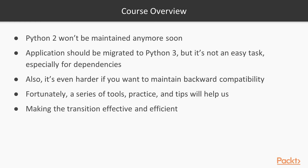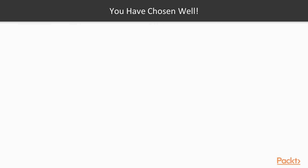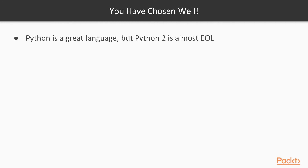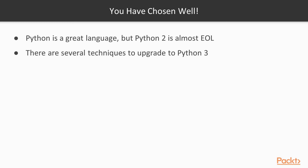We're also going to see how to make the transition effective and efficient. I think you're choosing well with this class, because Python is a great language, but Python 2 is almost at end of life. By the 1st of January 2020, it's going to be no longer maintained, and Python 3 will be the only maintained Python. There are several techniques to upgrade your Python code to Python 3, and remember that Python 3 is and will be the future of Python.